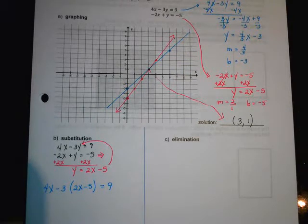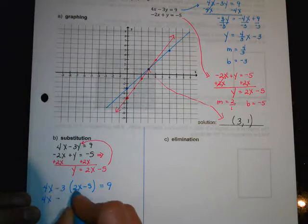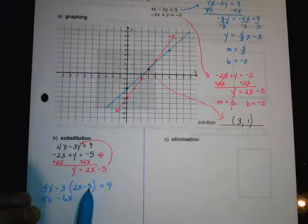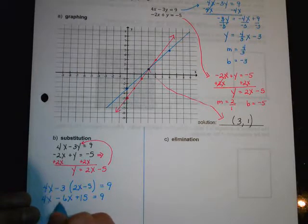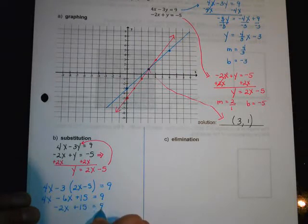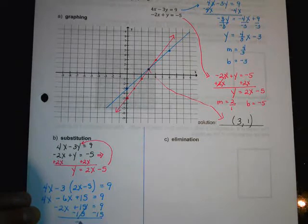Let's get rid of the parentheses. So it's a negative 3, so negative 3 times 2 is negative 6x. And negative 3 times negative 5, watch your signs. It's going to be positive 15. So let's combine our like terms. So we'll get negative 2x plus 15 equals 9. Let's subtract 15. So we'll get negative 2x equals negative 6. Running out of room. And we'll divide by negative 2. So there we go. x is equal to 3.